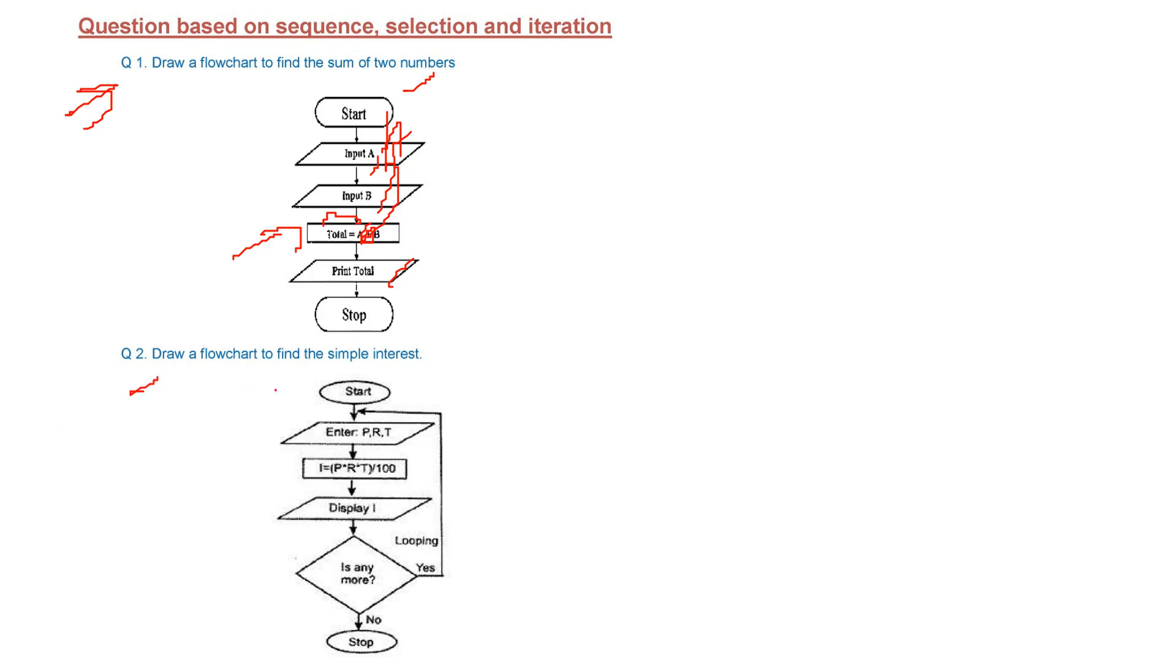Then the next is draw a flowchart to find the simple interest. So we start, we end. Then in the beginning, we have to enter P, R, T because we know the interest is P into R into T by 100.